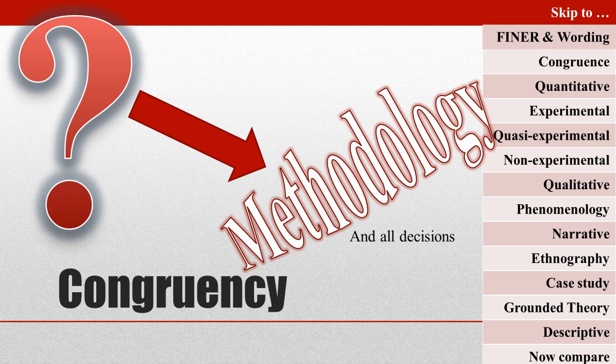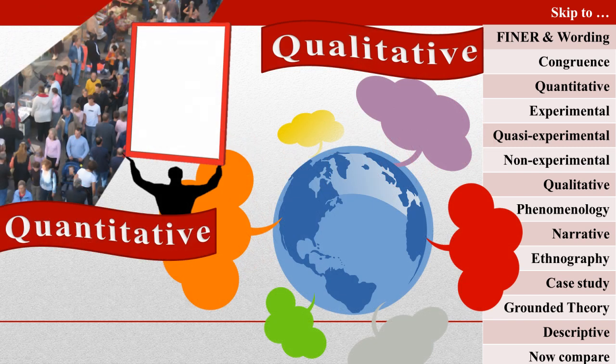When looking at a question, I like to first decide if it is best answered by quantitative or qualitative research. That helps you narrow down the possible methodologies a lot right up front. I like to analyze the question before looking at the methodology the researchers selected to avoid checking the answer, which could influence my decision making.